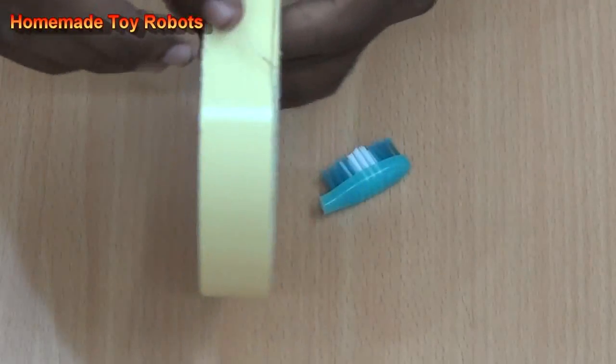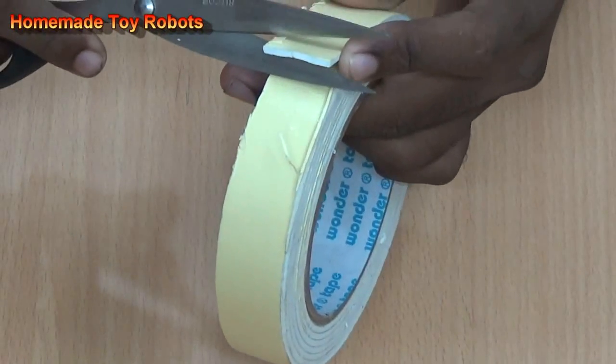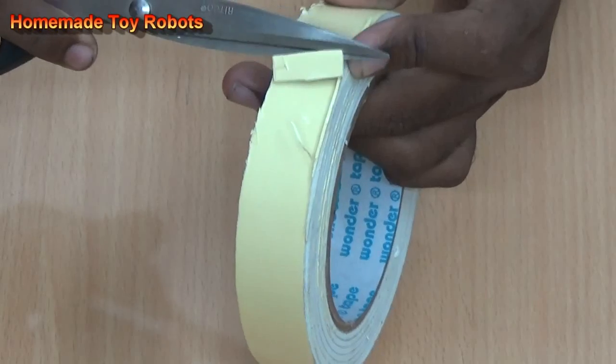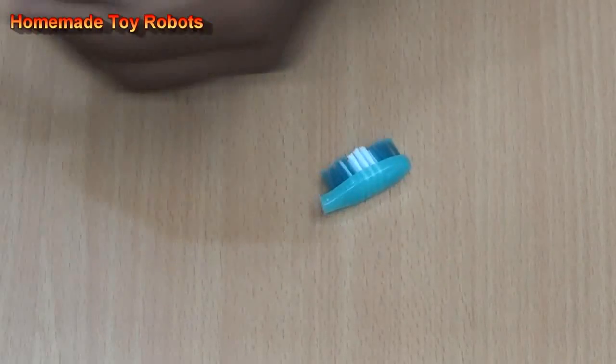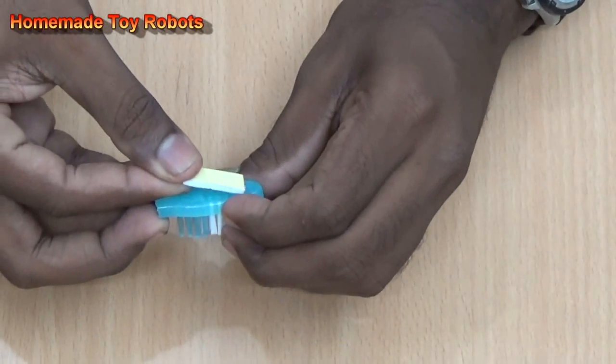Next take the double-sided tape and cut a small size of this. And stick it on the top of the brush.